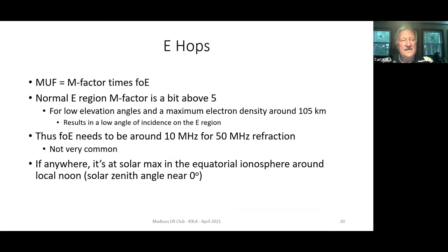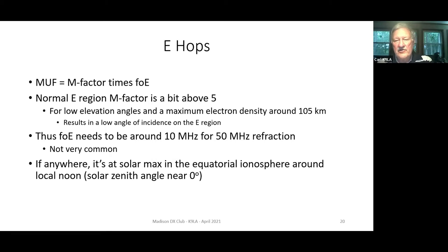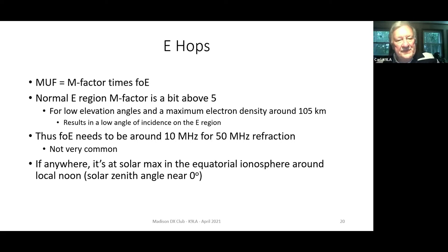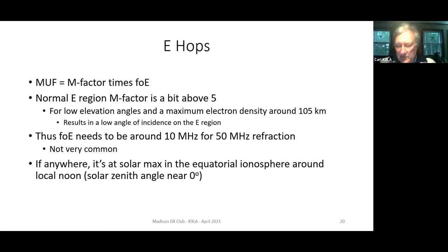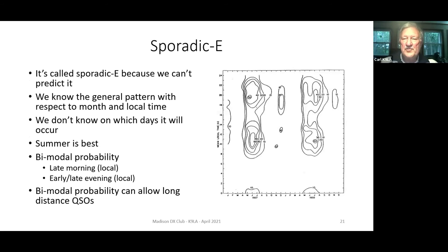E hops - the MUF is the M factor times the critical frequency of the E region, which is foE. Normally the E region M factor is a bit above 5, and what that says is foE needs to be around 10 megahertz for 50 megahertz refraction, and that's not too common. If anywhere, it's at solar max in the equatorial ionosphere around local noon. So it's kind of tough to have six meter QSOs via the normal E layer unless you're in the equatorial region at solar maximum.